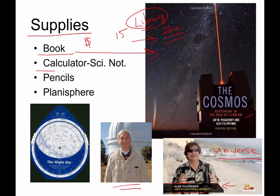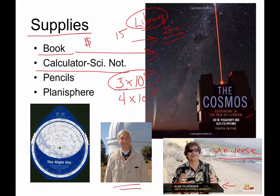You're going to need a calculator that can handle scientific notation. What do I mean by scientific notation? Something times ten to the — like three times ten to the eighth, four times ten to the negative seven. When we're dealing with stars, we're talking about things that are very, very big, large masses, and very far away. So we need scientific notation so that we can work with those numbers.